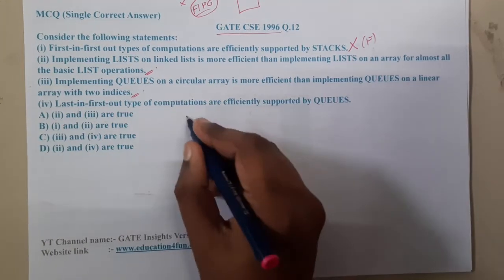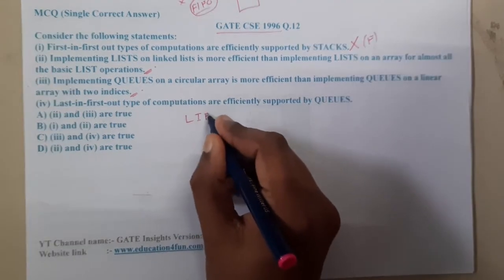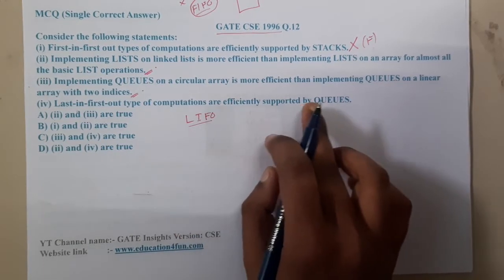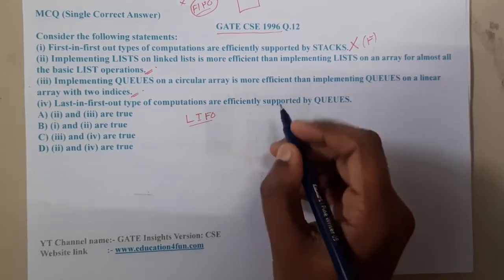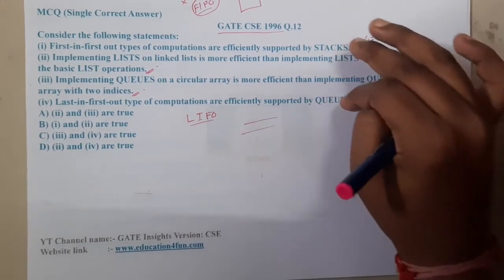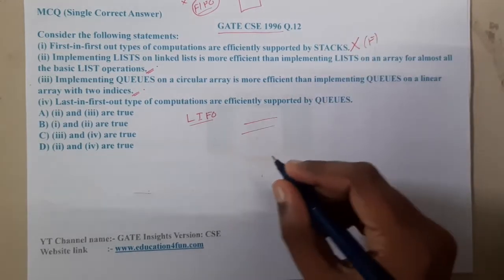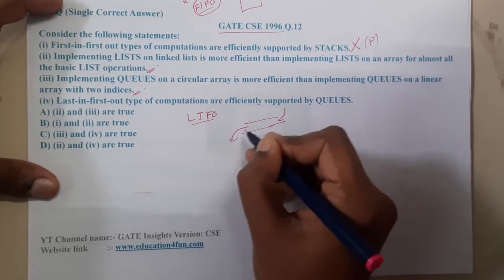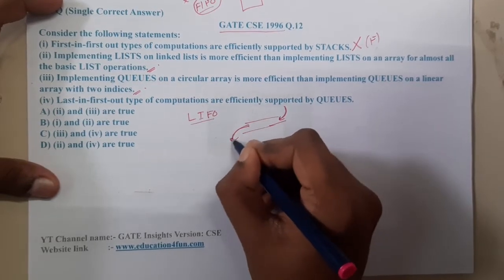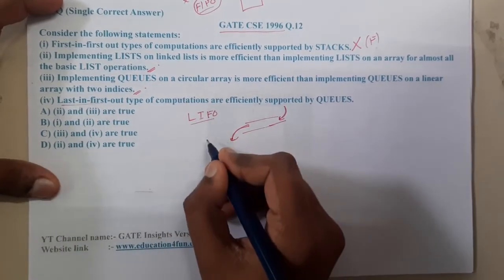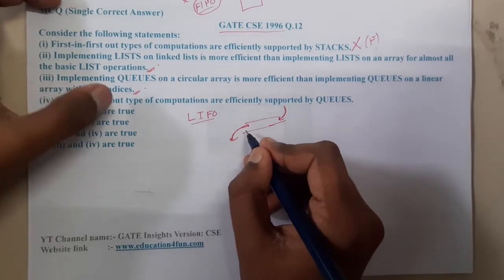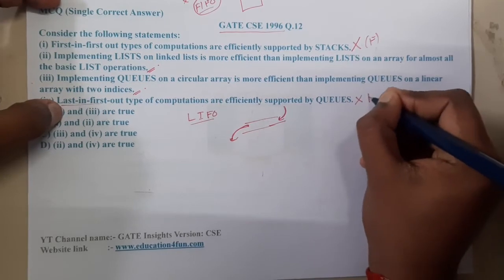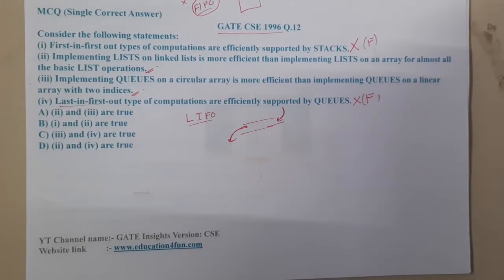The fourth statement says: Last-in-first-out (LIFO) computations are efficiently supported by queues. In a queue, insertion happens at one end and deletion at the other end, making it FIFO, not LIFO. So this statement is also absolutely false.